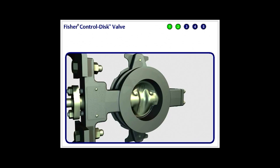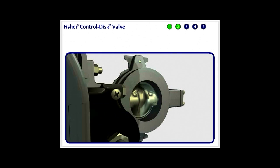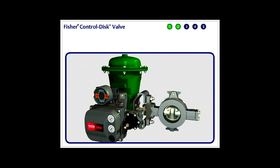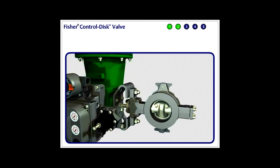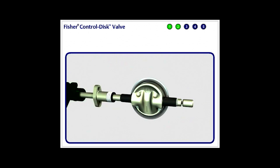The control disc valve also features a reduced dynamic torque requirement, which allows use of a smaller economical actuator. A drivetrain that ensures precise disc positioning, which minimizes process variability. Advanced shaft seal technology for emission control, a pressure-assisted disc seal for tight shutoff, long-life, low-friction shaft bearings for extended cycle life.